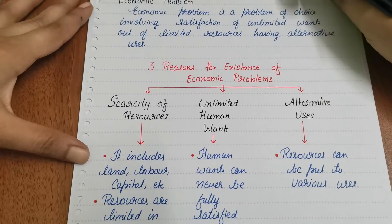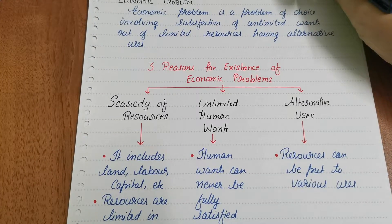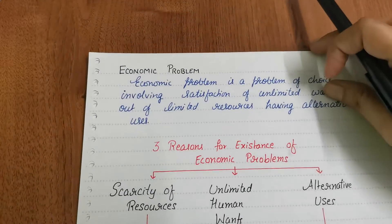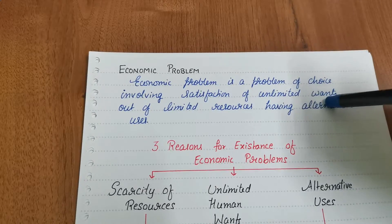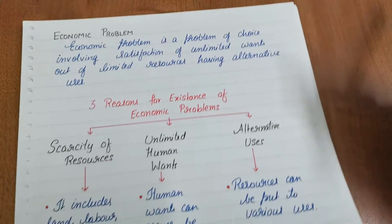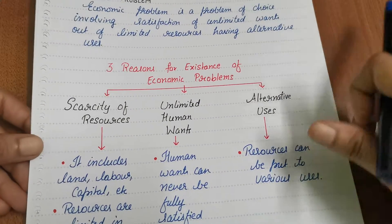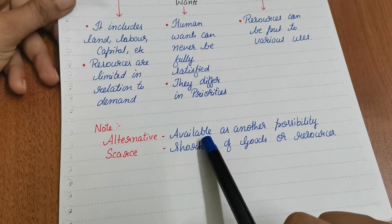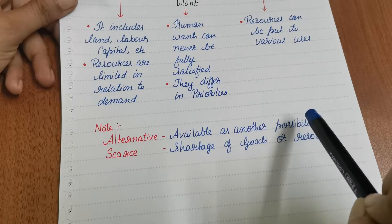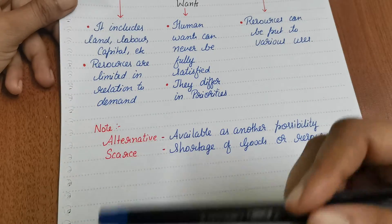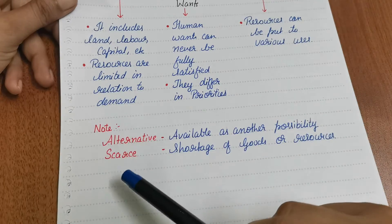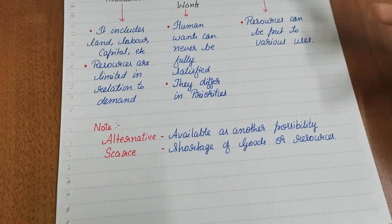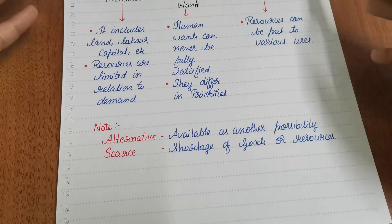The last cause of the economic problem is alternative uses — resources can be put to various different uses. These are the three reasons behind the basic economic problem, and only to solve this economic problem do we study economics. Two important terms here: 'alternative' means available as another possibility or another use, and 'scarce' means a shortage — you don't have abundant quantity, you have a limited quantity.